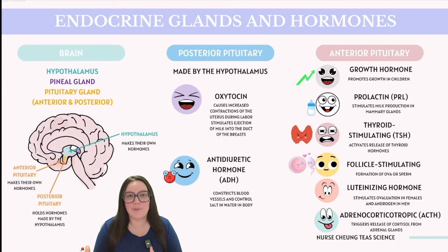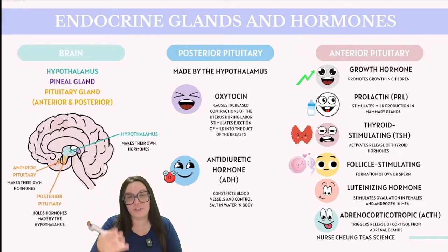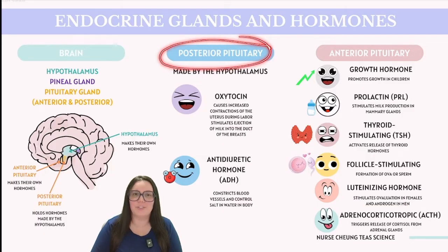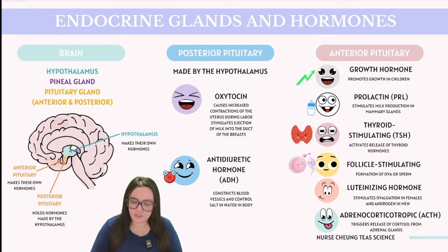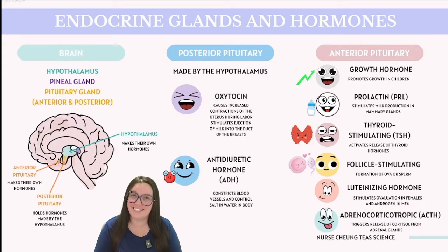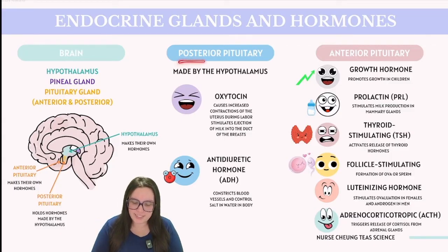Starting in the brain, the hypothalamus-pituitary region acts as a central command overseeing much of the endocrine system. The pituitary gland is divided into two parts: the anterior pituitary, which is more towards the front, and the posterior pituitary, which is more towards the back, both of which branch off from the hypothalamus. The hypothalamus produces several hormones which the posterior pituitary stores and later releases.